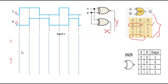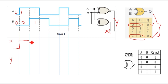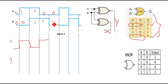When A=0 and B=0 (same), the output is 0. When A=1 and B=0 (different), the output is 1. When A=1 and B=1 (same), the output is 0 — sorry, my drawing is not very good. When A=0 and B=1 (different), the output is 1. Then again A=0 and B=0 (same), so output is 0.